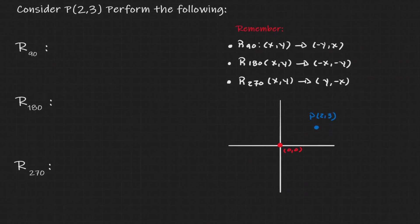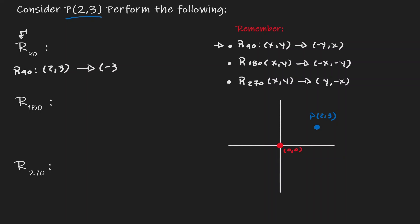Let's look at an example. We're given the coordinate point (2, 3), and we want to rotate it around the origin (0, 0). First, let's rotate it 90 degrees. Using the rule, the image is defined as (-3, 2) — the original x becomes the new y, and the original y becomes the new x but with the sign switched. Let's call this point P1. After plotting, point P at (2, 3) rotated 90 degrees in a positive direction lands at (-3, 2).